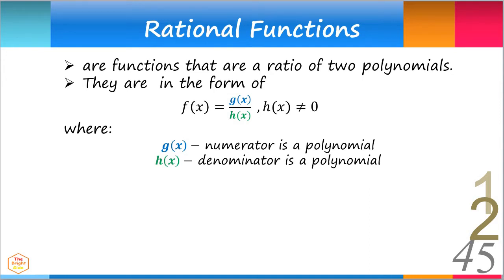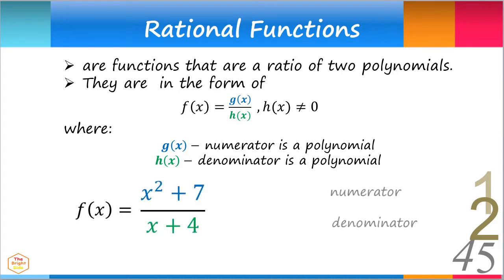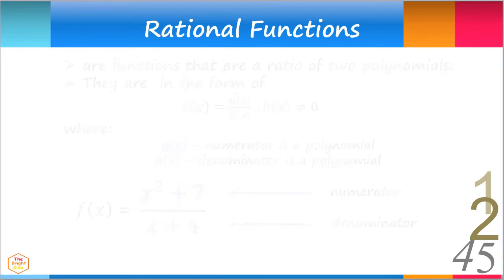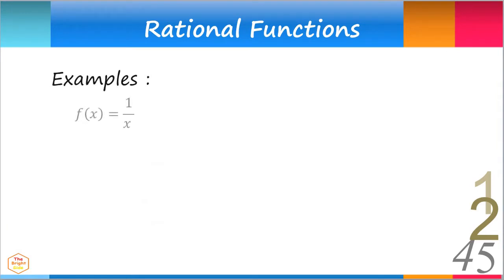An example of a rational function is x squared plus 7 over x plus 4, where we identify the numerator and the denominator. Here are other examples of rational functions and their graphs.